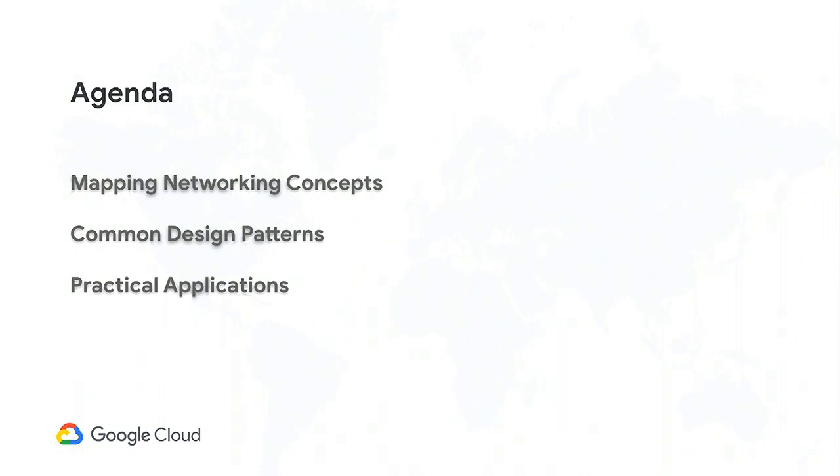A quick summary of what we're going to cover in the next 50 or so minutes. I'm going to start by talking about familiar networking concepts from your on-premise environment and how those map into Google Cloud, highlighting how some things are different in the cloud. Then I'll hand it over to Matt, who will talk about common enterprise designs and recommendations. Finally, we'll come back together to talk about best practices as customers start their journey towards Google Cloud.